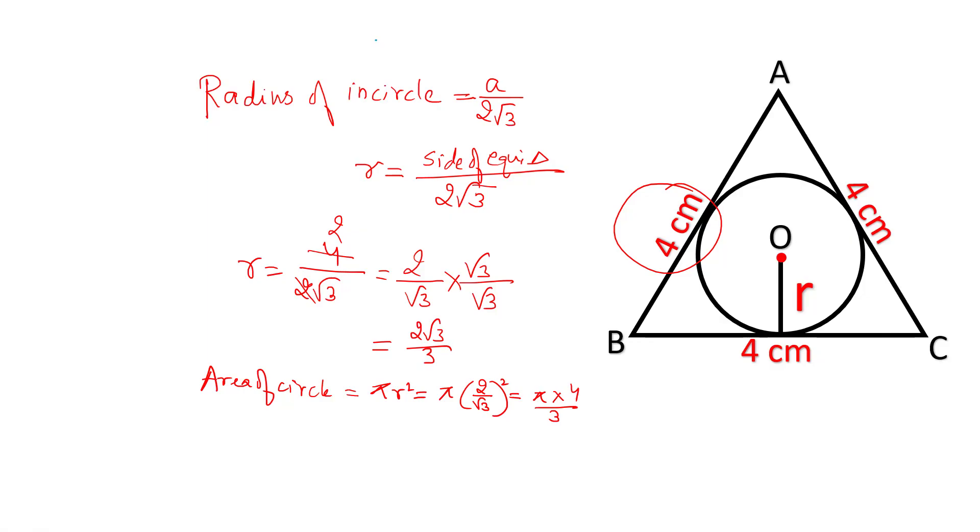So friends, this is the direct formula to calculate the radius of incircle of an equilateral triangle: side upon 2 under root 3.